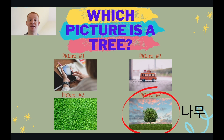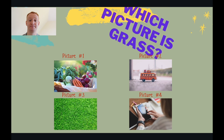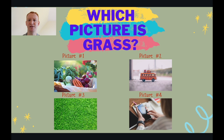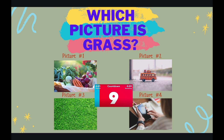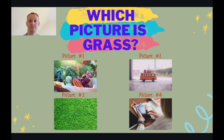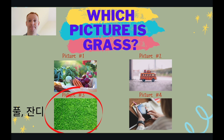This tree has green leaves. Picture three is grass. This grass is very green. This grass has been cut short.